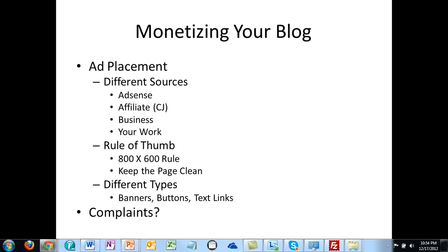So you want to use different sources in order to monetize your blog: AdSense, affiliate, things that you're doing, your opt-in — different advertisements for different things on your actual page. A rule of thumb is that you want to make sure your blog page is clean. For every time you scroll 800 by 600, you should see one ad, and you want to make sure that you don't overdo the advertisements.